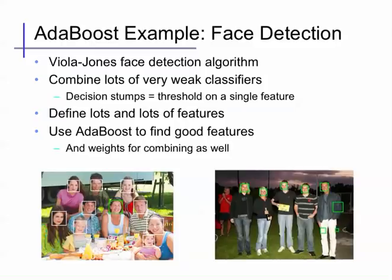One example where AdaBoost was really applied with tremendous success is the face detection problem — a classic algorithm called the Viola-Jones face detector. The idea is to combine a collection of many very weak and easy-to-compute classifiers. Viola-Jones uses decision stumps that threshold on a single feature, just like the earlier example, defining lots and lots of features but using very simple classifiers of those features. The large number of features makes us prone to overfitting, but the choice of an extremely simple classifier function makes us less prone to overfitting, and then AdaBoost slowly builds up a more complex function.